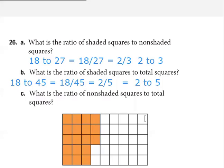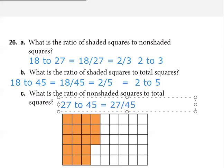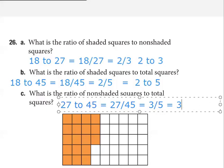27 to 45. We've got 27 non-shaded squares — we counted them already — and 45 total squares, so it's 27 to 45. As a fraction, 27 over 45. Now, 5 goes into 45 but 5 does not go into 27, so we need a number that goes into both. What number goes into 27 and also into 45? 9. Good. 9 into 27 goes 3 times, 9 into 45 goes 5 times, so we get 3 over 5.